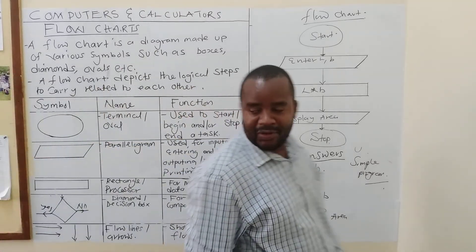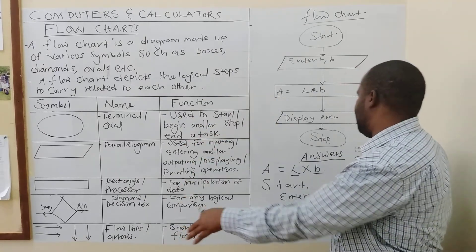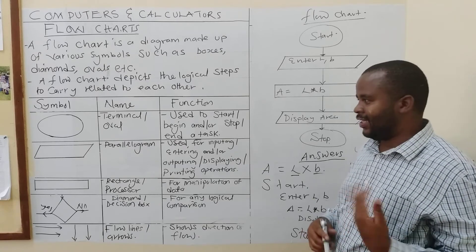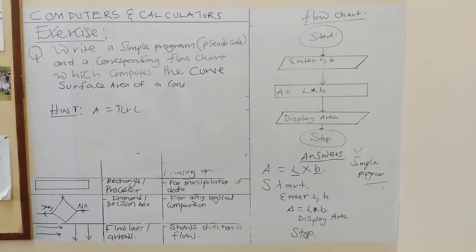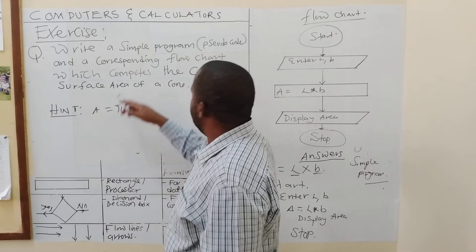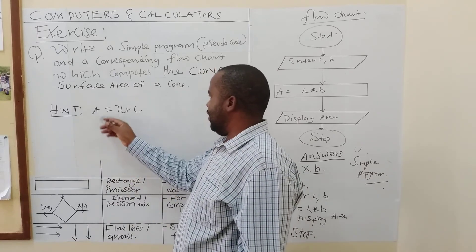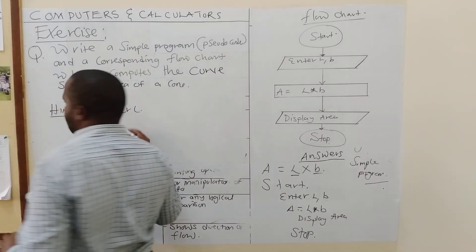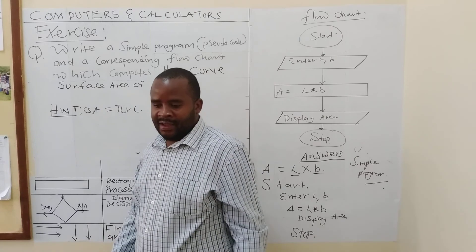I hope you have learned some more skills on how to get started. So, if you want the symbols, they are there. And, they have to draw the flowchart. So, that's how we are in for this presentation. I am going to give you an exercise. This is our exercise. We are saying write a simple program and the responding flowchart which computes the curved surface area of the cone. Now, here I have given you a hint that the area, the curved surface area of the cone, we need to emphasize the curved surface area of the cone. This is pi r L. So, attempt to this one. Thank you so much.